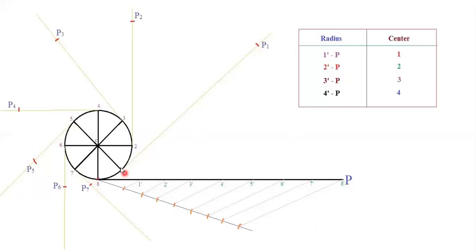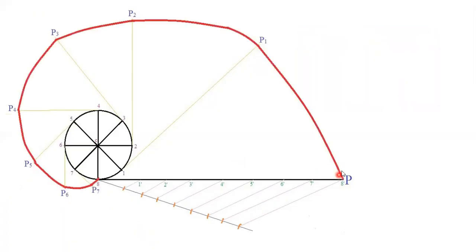Name the intersection points as P1, P2, P3, and so on. Erase the extra construction lines above the arcs so the diagram looks neat. Then join all the points — P, P1, P2, P3 — through to the 8th point with a smooth curve using an HB pencil. The curve should end exactly at point 8, since the string length equals the circumference of the circle.